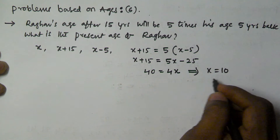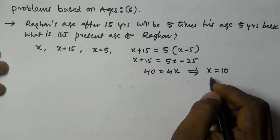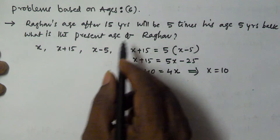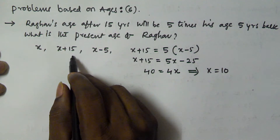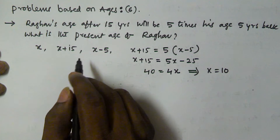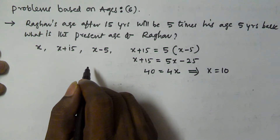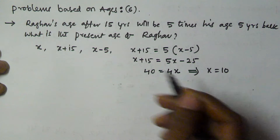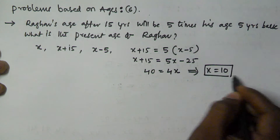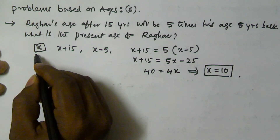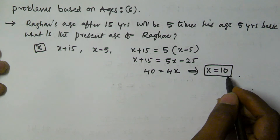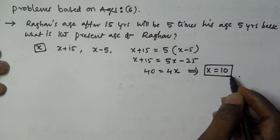So if x is equal to 10, Rago's age after 15 years is x plus 15, and his age 5 years back is at the present age. We have to find the current age. Hence the present age of Rago is 10 years, because we assumed the current age of Rago is x, and we got x equal to 10. So the current age of Rago is 10.